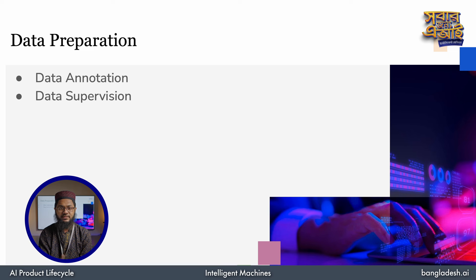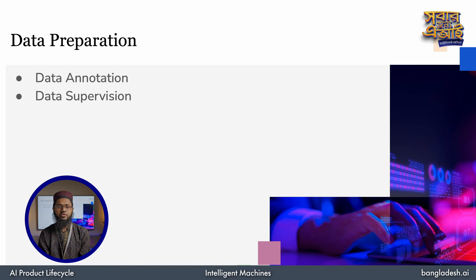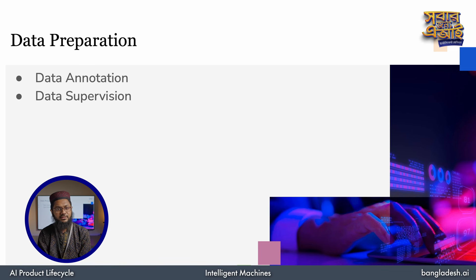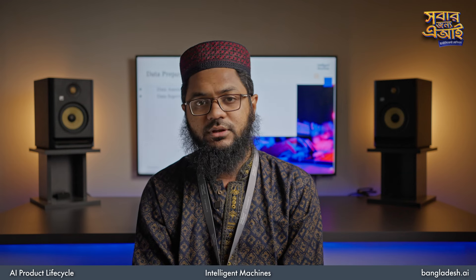We need to understand which data splits to use. For example, with banner, PA, or material images, we train the model to detect and identify objects. When we build this model, we annotate the data — we use a bounding box to draw around the object. This is annotation. We can annotate data manually using an annotation platform, such as an open-source data annotation platform that we can customize.